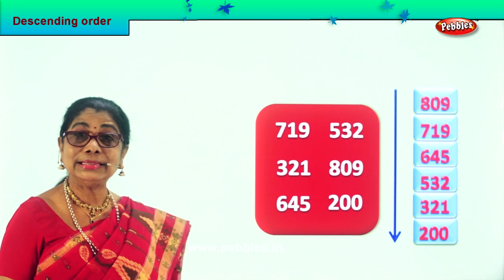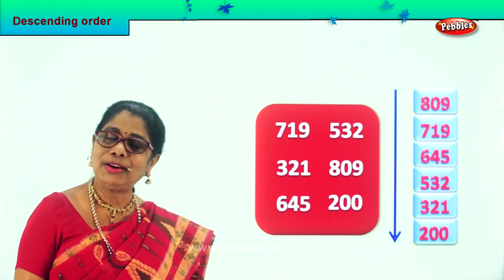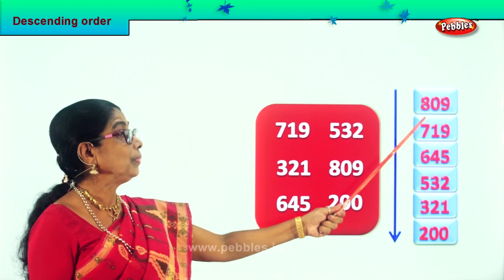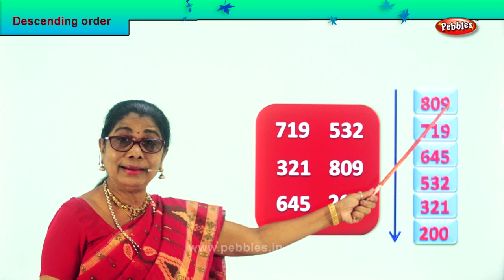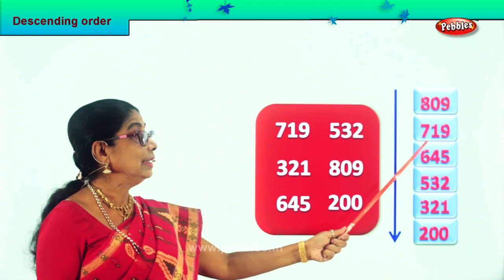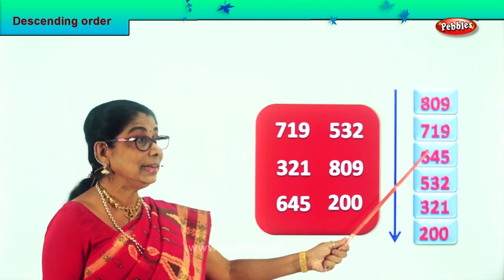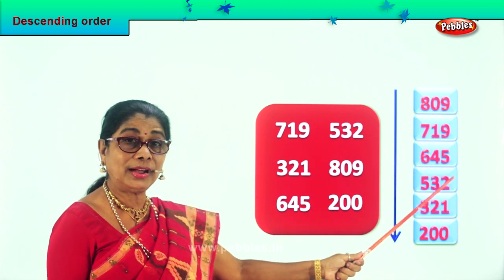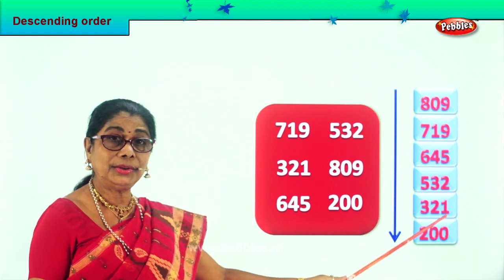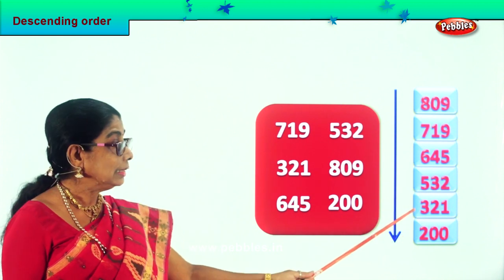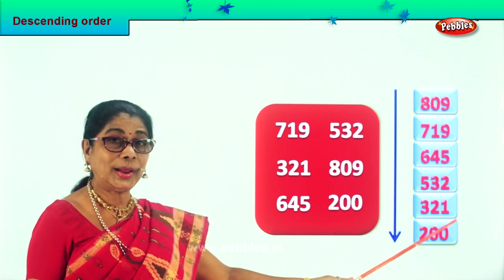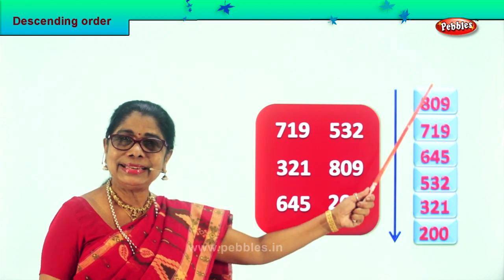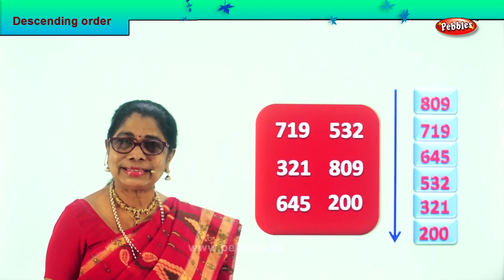Yes, after arranging, shall we read aloud the numbers in descending order? Eight hundred nine, seven hundred nineteen, six hundred forty-five, five hundred thirty-two, three hundred twenty-one and two hundred. Isn't it an interesting exercise?